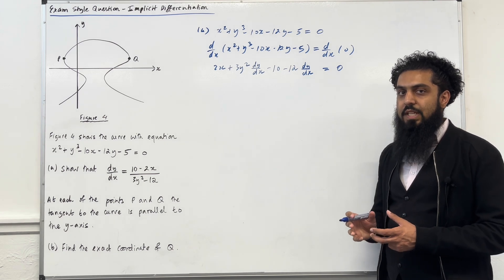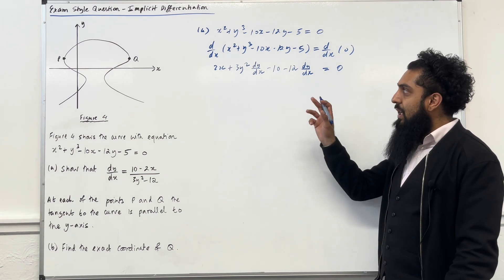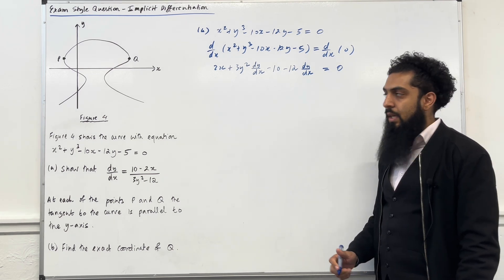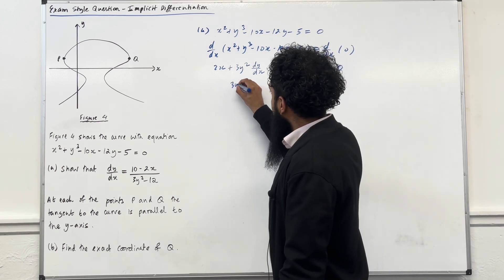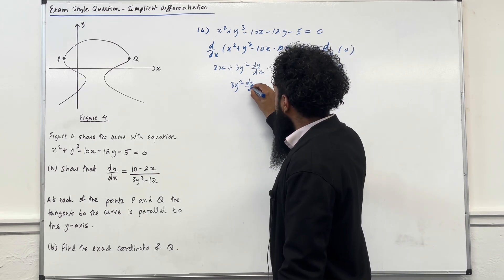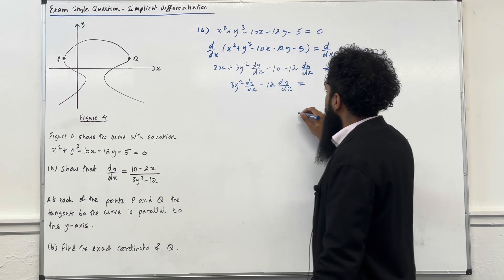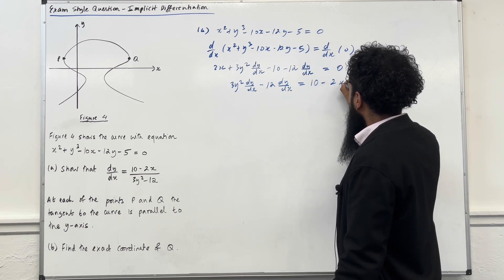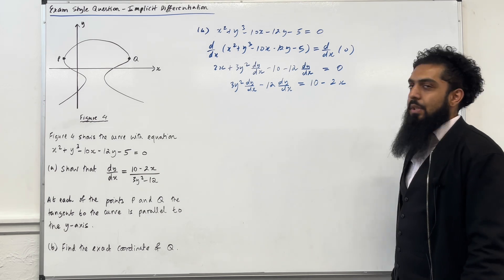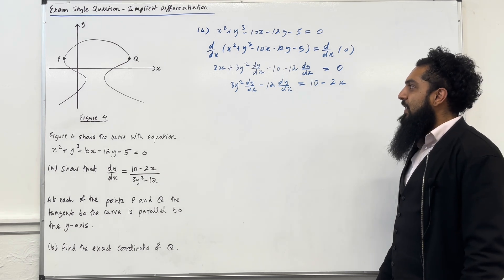Now I'm going to keep the dy over dx's on the left hand side and all the other stuff I'm going to take to the right hand side. So I've got 3y squared dy over dx minus 12 dy over dx equal to 10 minus 2x.